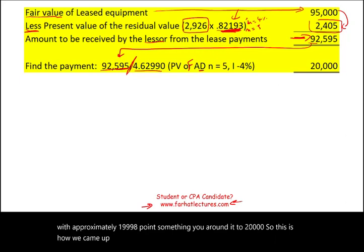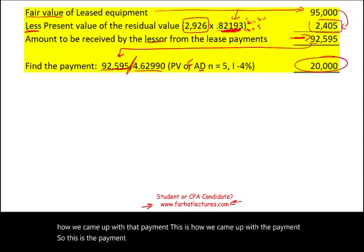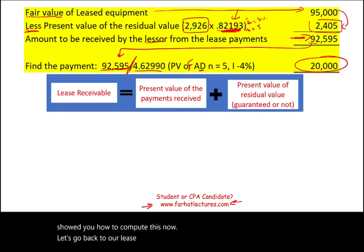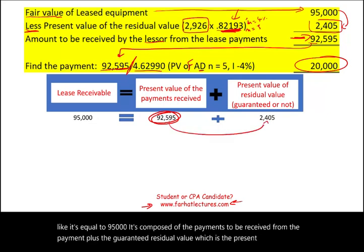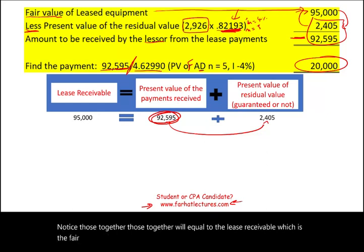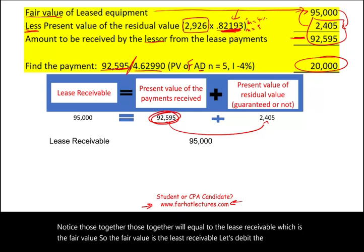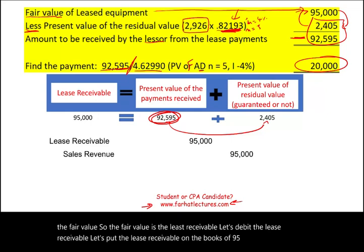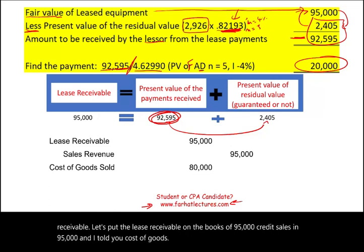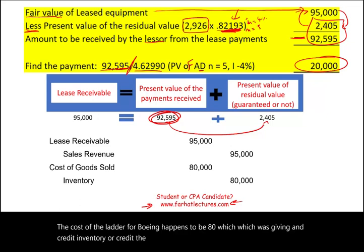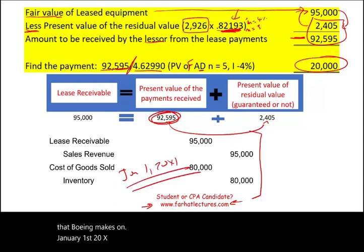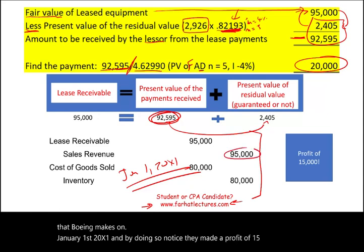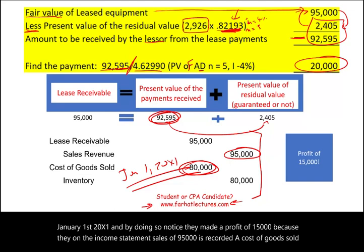The lease receivable equals $95,000, composed of the present value of the payments plus the present value of the residual value, which together equal the fair value. Boeing records on January 1, X1: debit Lease Receivable $95,000; credit Sales $95,000; debit Cost of Goods Sold $80,000; credit Inventory (the ladder) $80,000. This results in a gross profit of $15,000 on the sale, with additional profit to be earned from interest over the lease term.